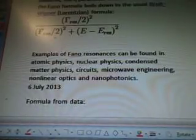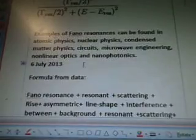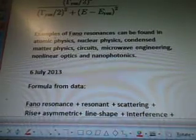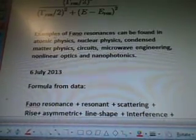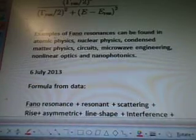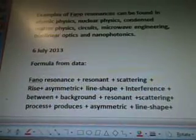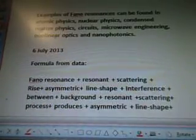Examples of Fano resonance can be found in atomic physics, nuclear physics, condensed matter physics, circuits, microwave engineering, non-linear optics, and nanophotonics. July 6th. Formula from the data.